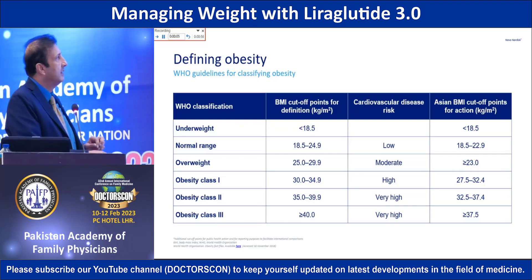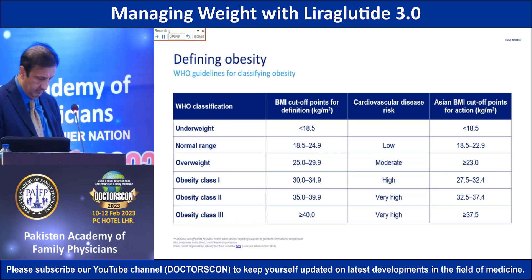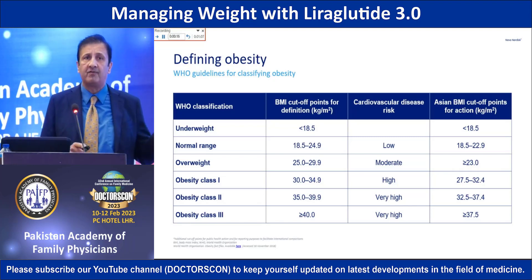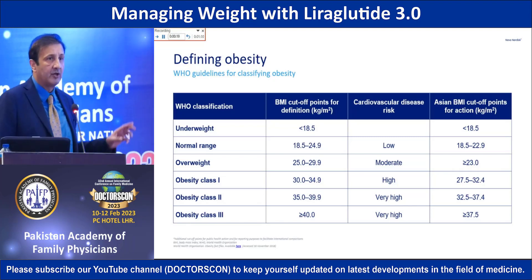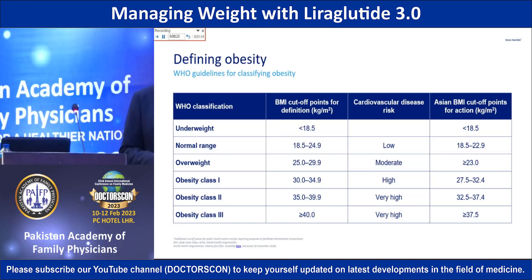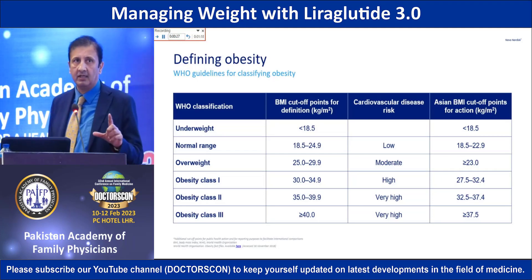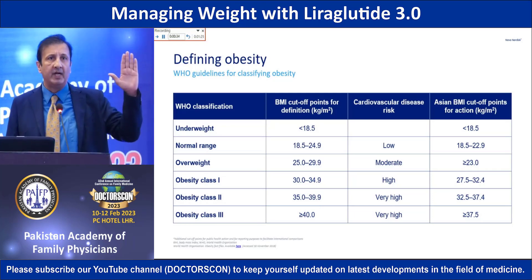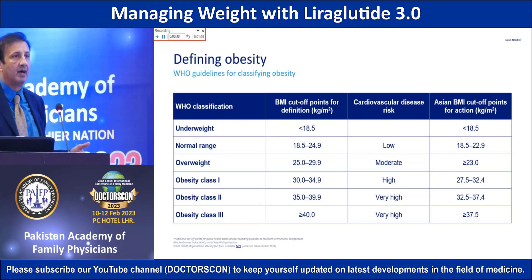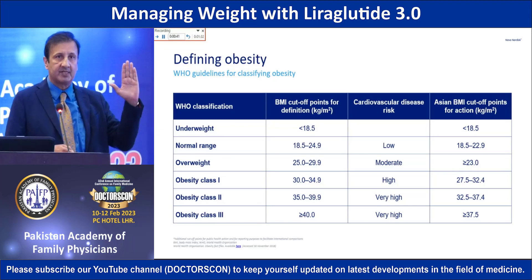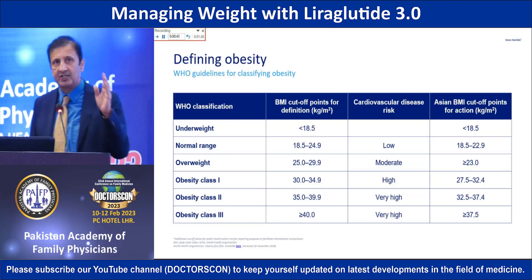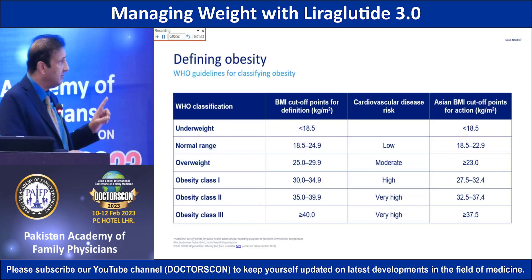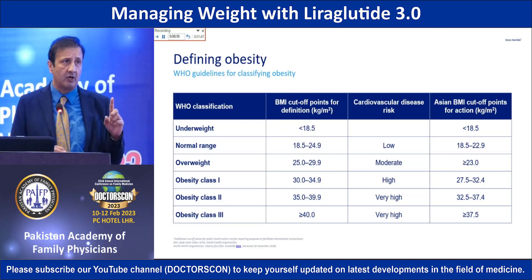If we take WHO guidelines, they suggest that an underweight patient has a BMI of less than 18.5, and a normal weight range is a BMI of 18.5 to 24.9. As a physician, BMI is a simple tool available to you — weight in pounds and height — and within seconds you would know where the patient stands. That should be the first step when a patient walks into your clinic.